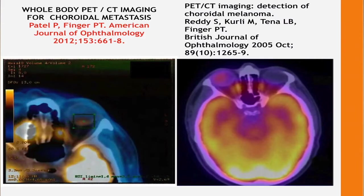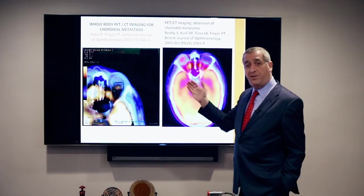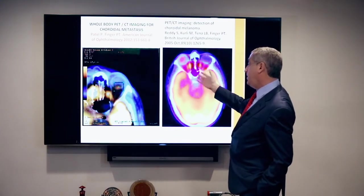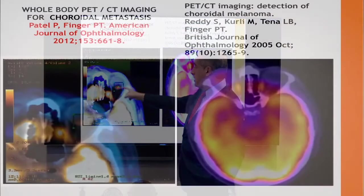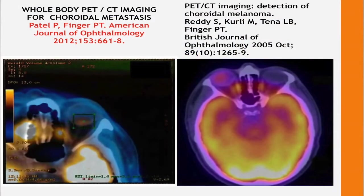We also noticed that metastatic lesions lit up inside the eye on PET-CT. Looking at intensity of PET brightness, we found that metastases for size were much brighter than choroidal melanomas of similar sizes. That's another aspect we can consider when trying to differentiate the two.